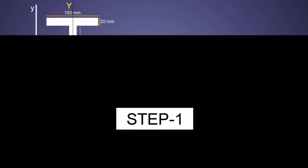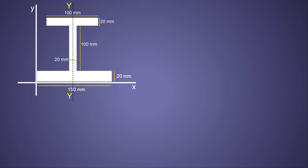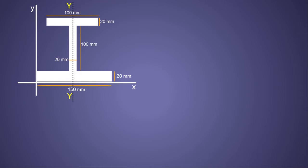In step one, we first need to see if there are any symmetrical axes in the component. In this problem there is one symmetrical axis in the vertical direction — we name it the YY axis. This means the whole component is symmetrical with respect to this axis; observe that the left and right parts are identical.